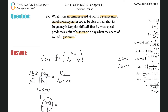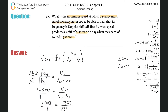So I have 1.003 equals 331 over (331 minus the velocity of the source). That is exactly what the problem is asking — what speed produces the shift? Once I solve for the velocity of the source, that's my answer. The source is what's moving toward you at the minimum speed.